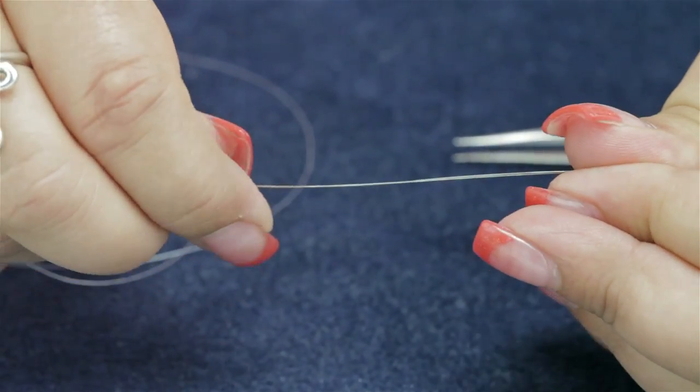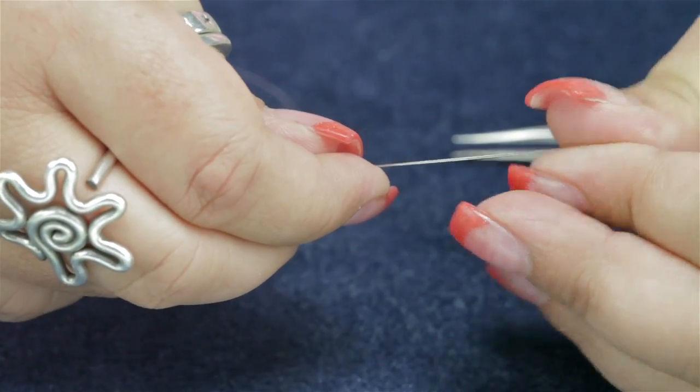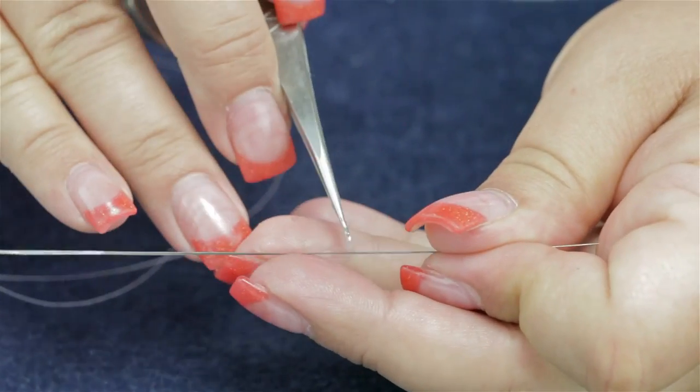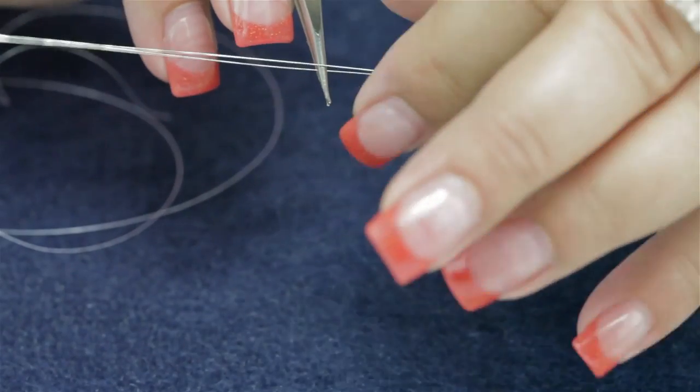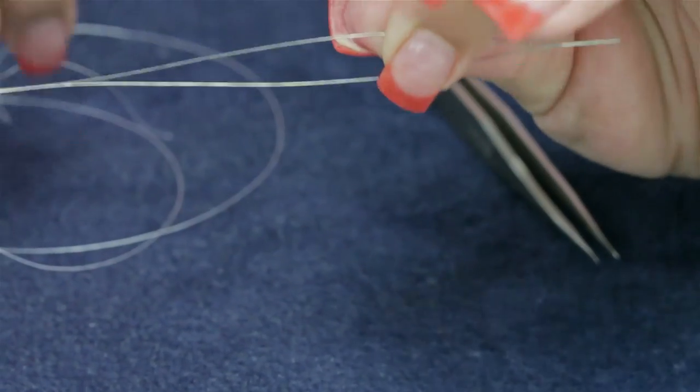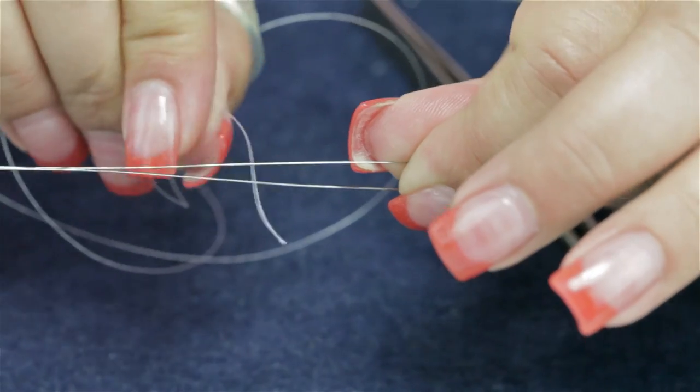One of the things about the big eye needle is that it is much easier to thread. I like to separate the center with my tweezers, expose the eye, and then you can slip your thread through.